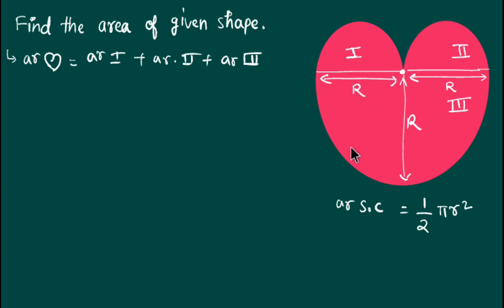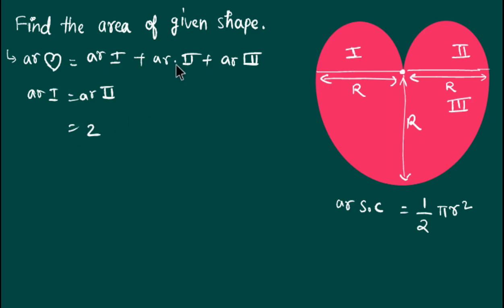Now we have to find the radius of the smaller part. The first part and second part have a common diameter, so the radius of these two parts is equal. Since the radii are equal, the areas of these two semicircles are equal — area of first part equals area of second part. So area of first plus area of second becomes two times the area of the first part, plus the area of the third part.